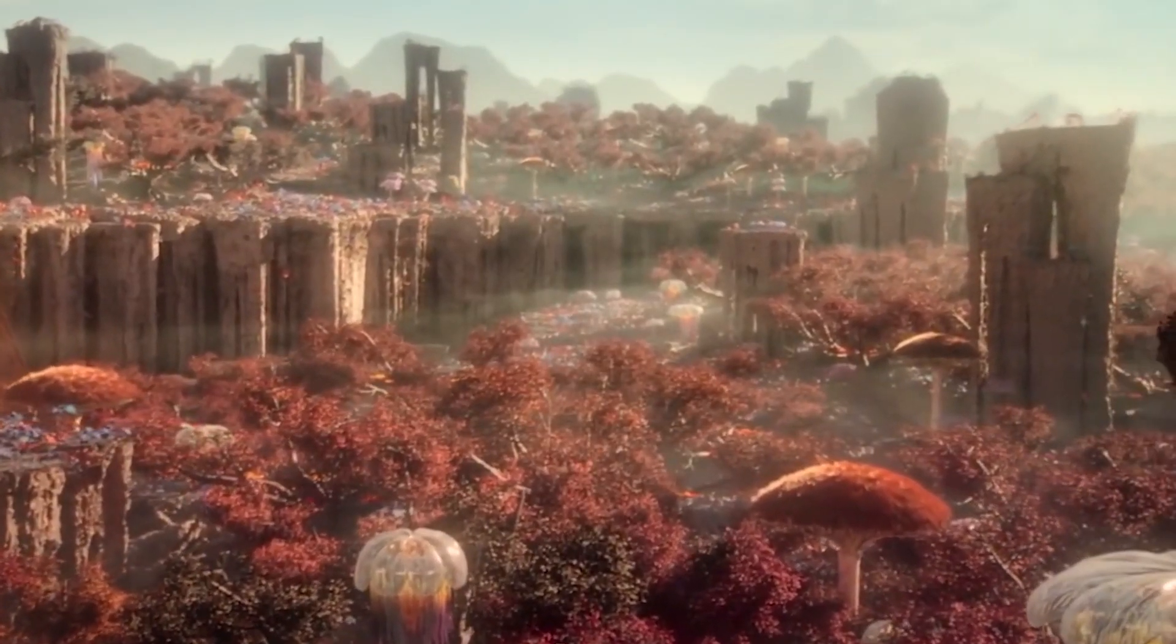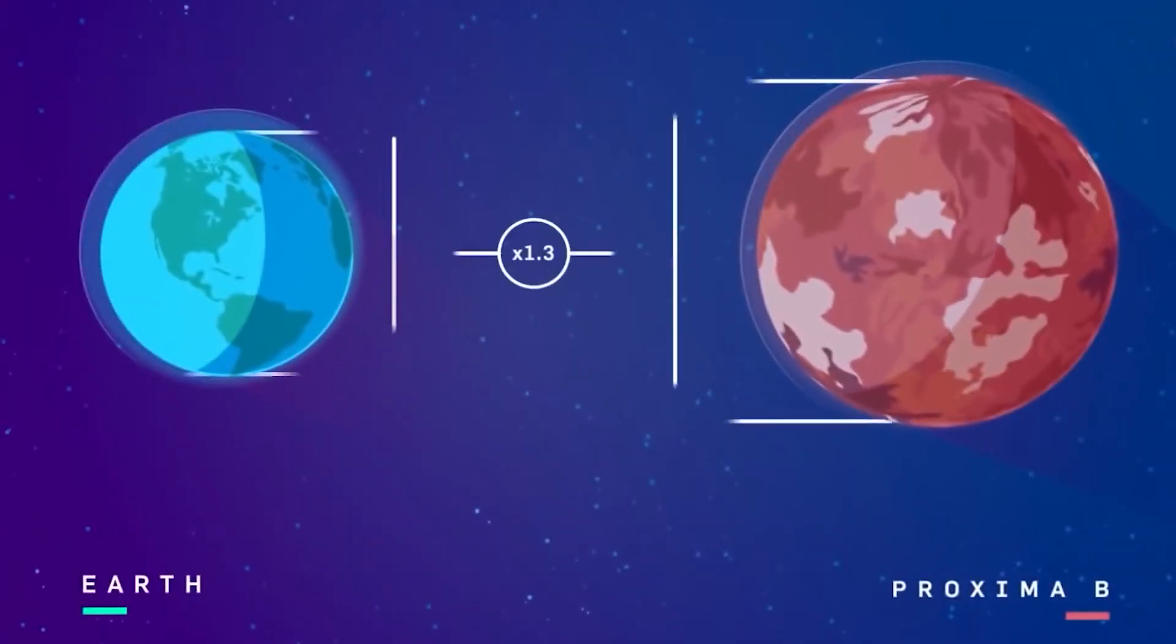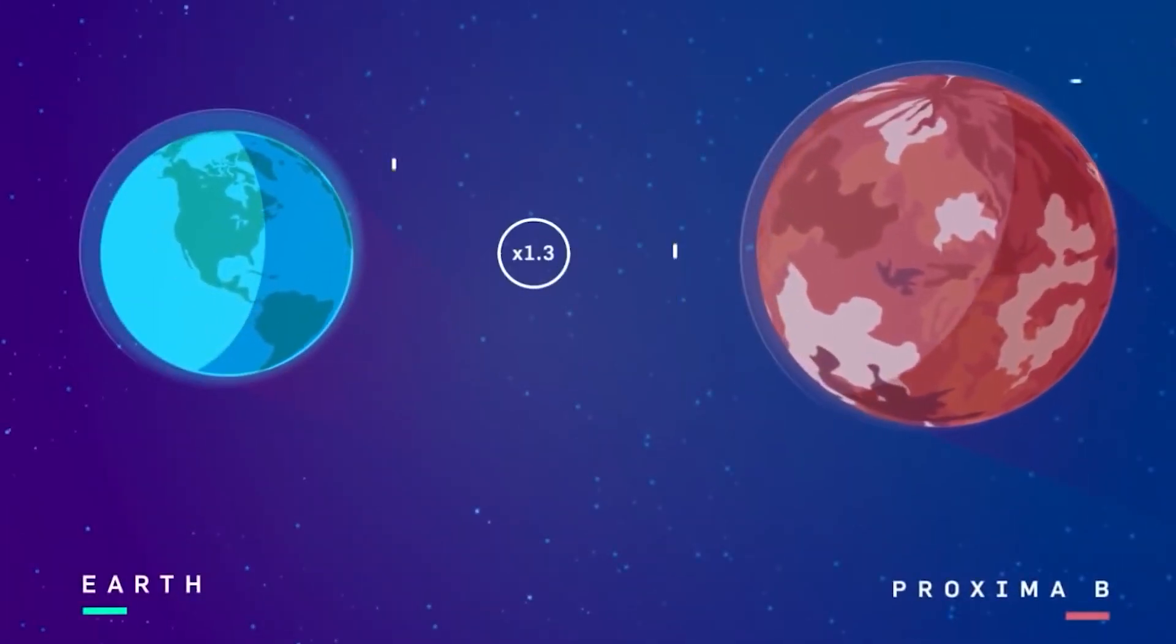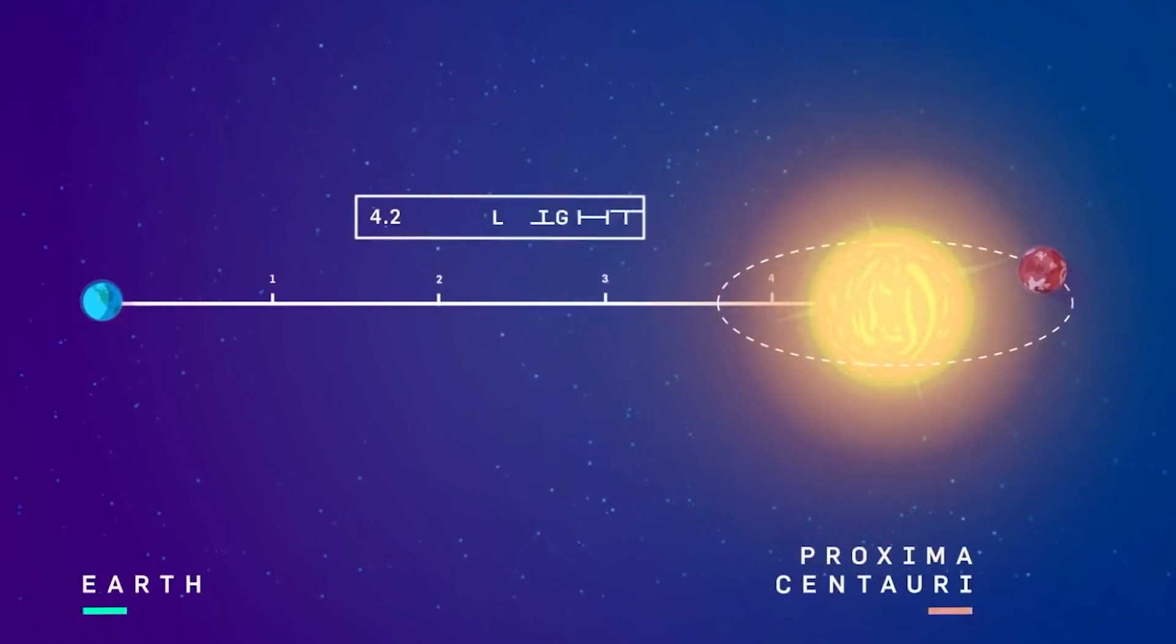But theoretically, it might be inhabited by creatures similar to you and me. Proxima B is right next door to Earth, but it is still 4.2 light years or about 20 trillion miles away.